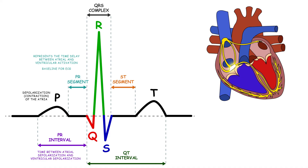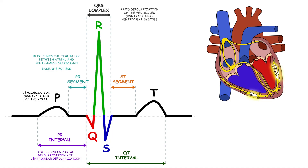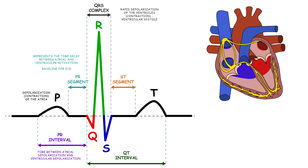Note that the PR segment is also the baseline for the ECG curve. The QRS complex is a distinct waveform that represents the rapid depolarization of the ventricles, which leads to their contraction or ventricular systole. The QRS complex occurs at the start of the isovolumetric contraction phase. The ST segment is a horizontal line that represents the interval between ventricular depolarization and repolarization.